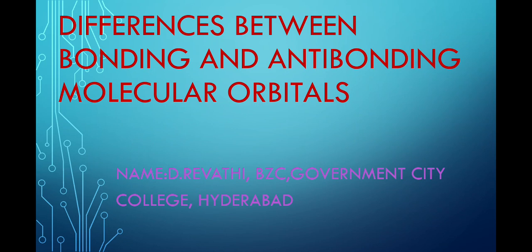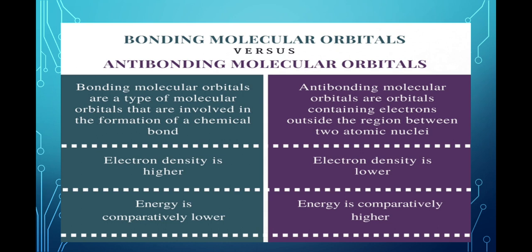Firstly, a molecular orbital is an orbital of an electron in a molecule. Bonding molecular orbitals are a type of molecular orbital that are involved in the formation of a chemical bond. Anti-bonding molecular orbitals are the orbitals containing electrons outside the region between two atomic nuclei.